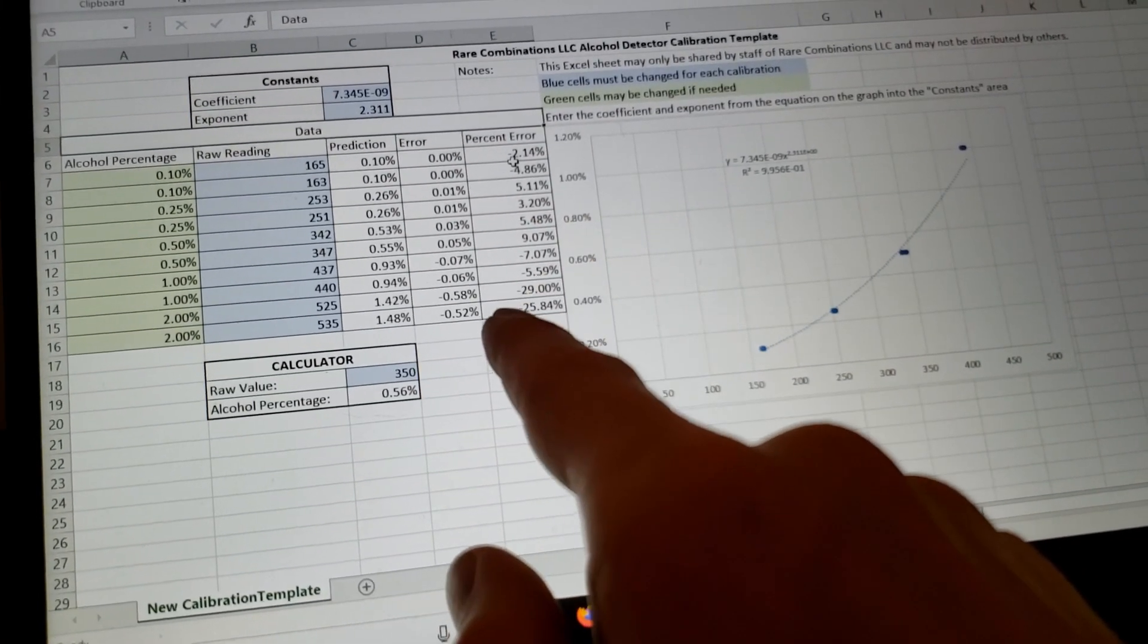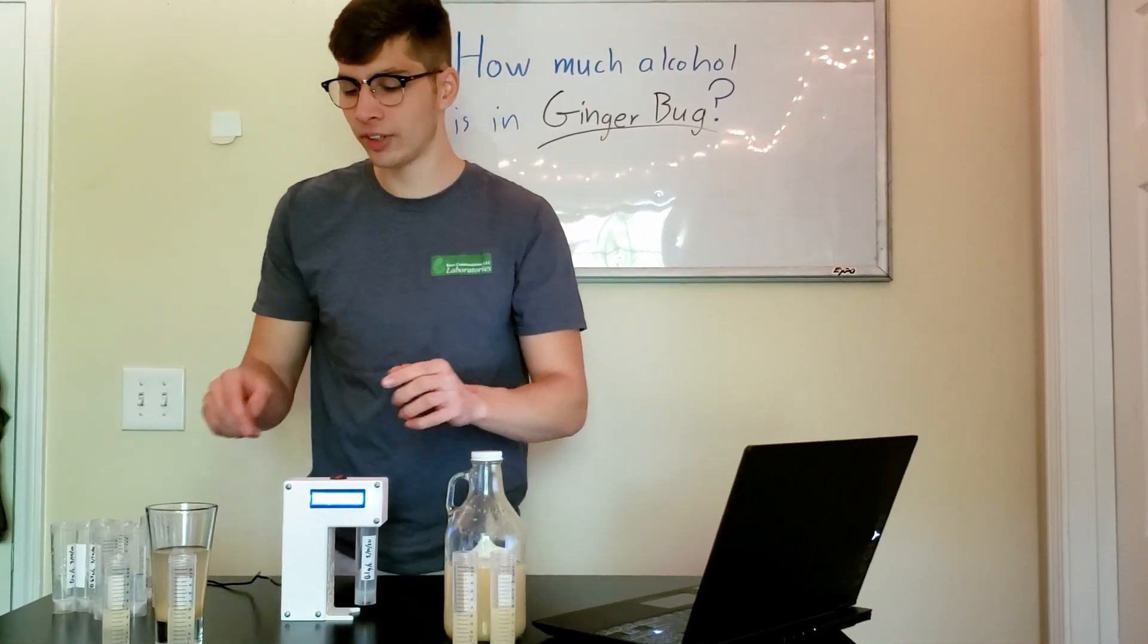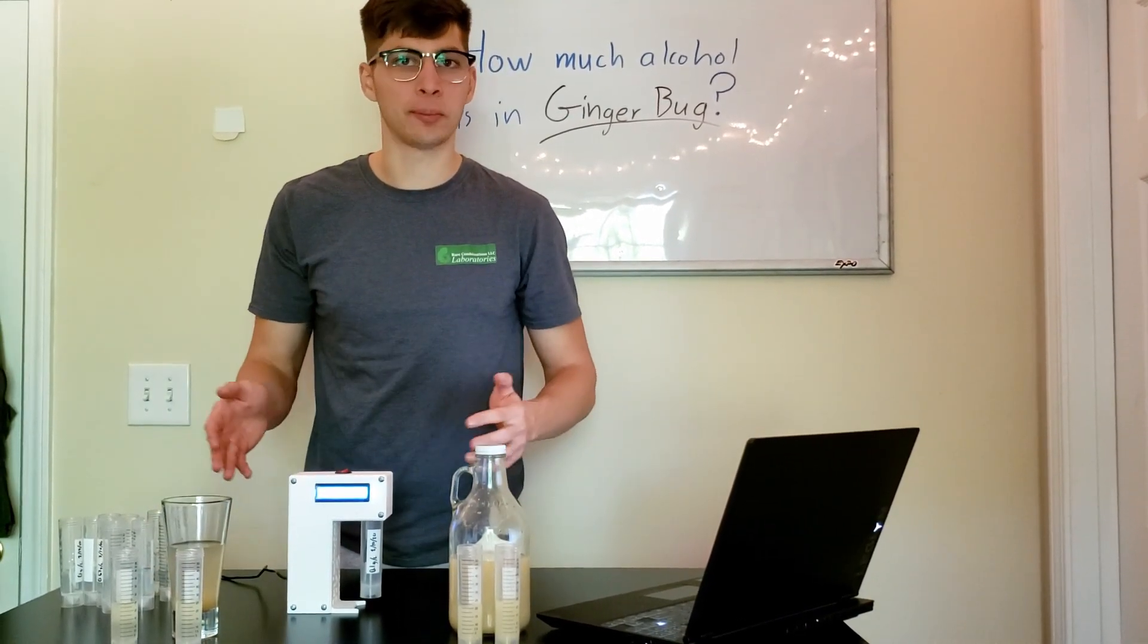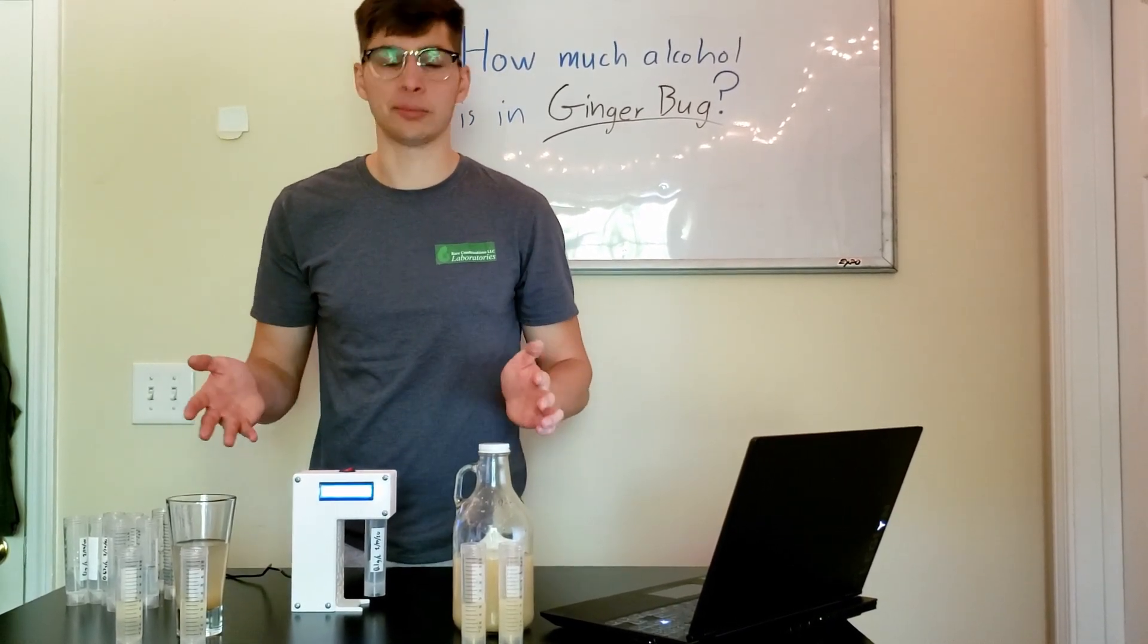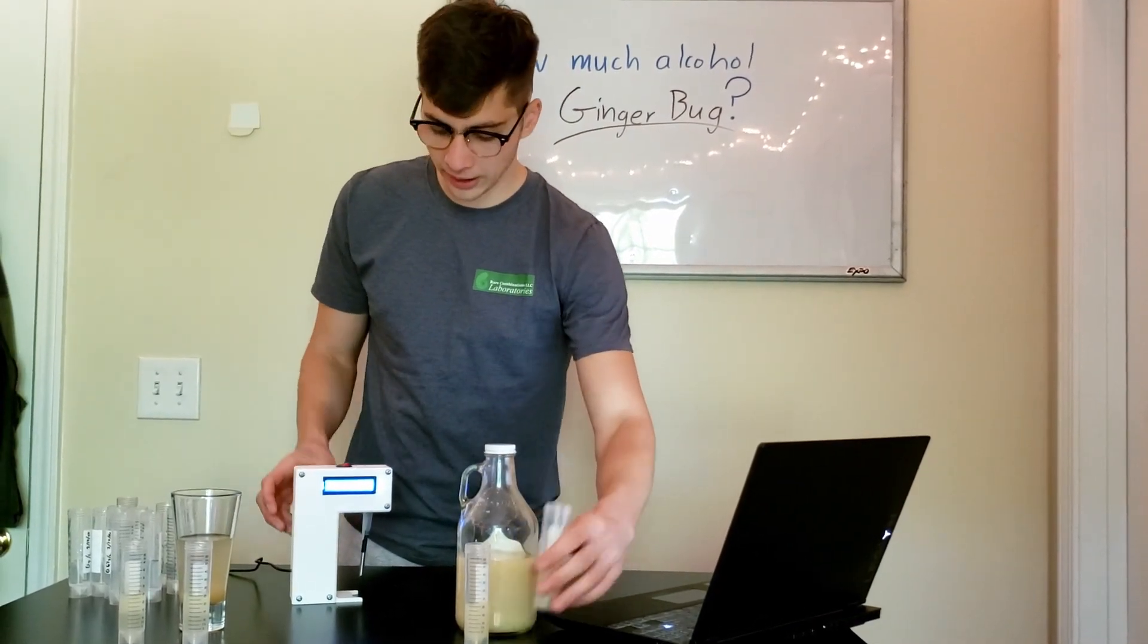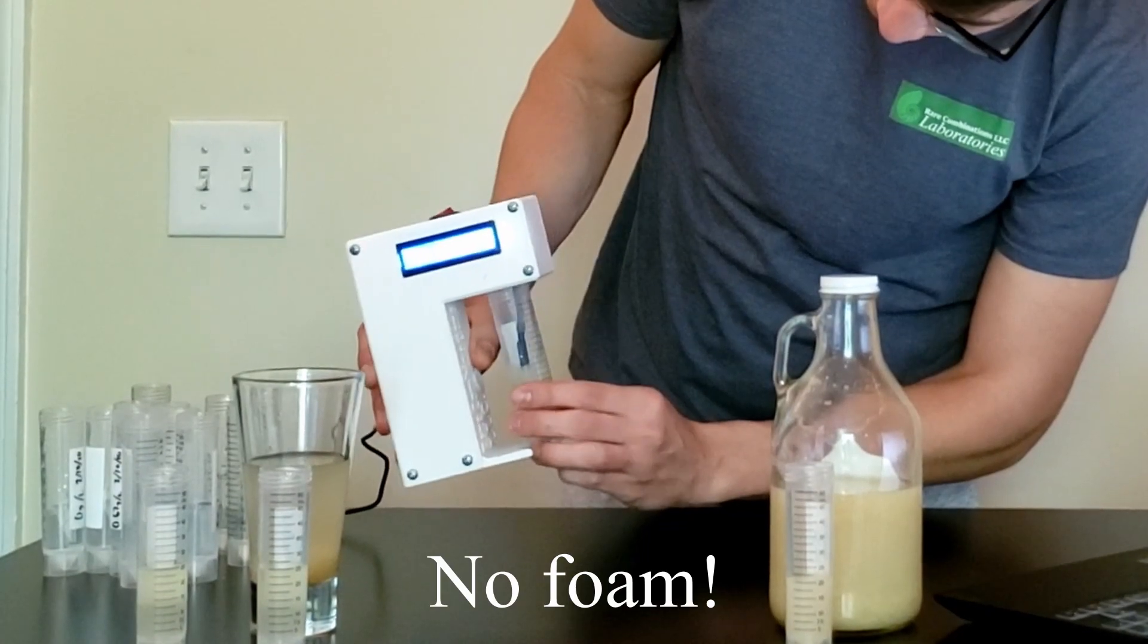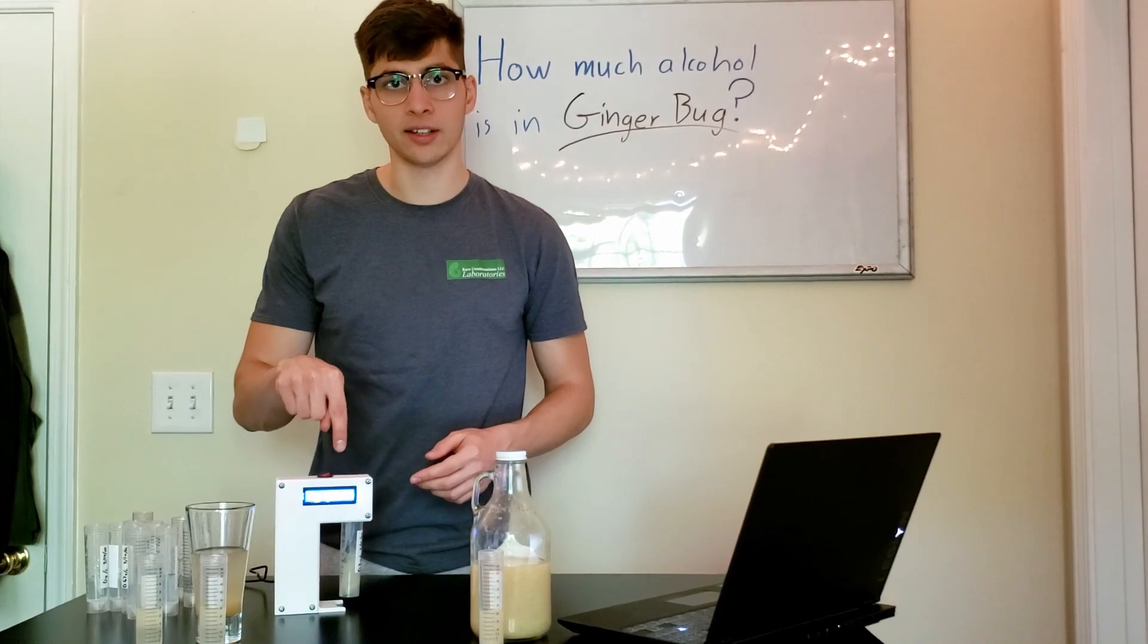So let's get started finally with testing the ginger bug samples. Again, we have this ginger bug that we're going to test alcohol percentage of, and we have this ginger soda that we're also going to test alcohol percentage of. Just want to note that both of these samples are homemade, so they're not being sold in stores. They're not sold as alcoholic beverages. It doesn't matter, just homebrewing. The first thing that I want to make sure of before I test the sample is to make sure it isn't going to foam into the detector because it can ruin the sensor inside. So I'm just going to wash it as I put it in. We're going to let that sit in the detector for a second so that the reading can stabilize.